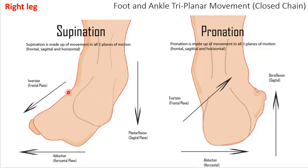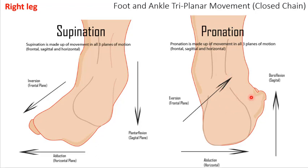If this is your right leg and you're pushing off on your toes, like standing up on your tippy toes, that is basically supination. You're doing plantarflexion of the ankle, adduction because your weight's shifting to the outside of your feet, and a little bit of inversion. Conversely, if you're standing and you do a squat and curl down, your foot will move with the tibia going up and out for the foot — eversion and abduction.